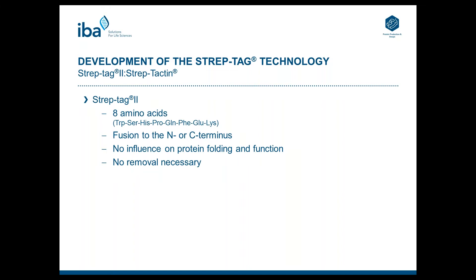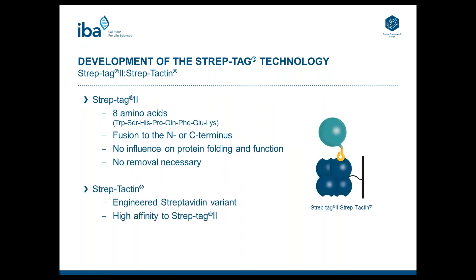However, StrepTech 2 is not binding to Streptavidin with the same binding affinity as StrepTech 1. Therefore, Streptactin was engineered with an altered biotin binding site to improve the binding affinity for StrepTech 2. This system was used successfully for 15 years for protein purification, detection and assays. But it has some weaknesses for capture of proteins or other high affinity applications such as low abundant proteins, batch purification or assay applications. Therefore the system needed further improvement.